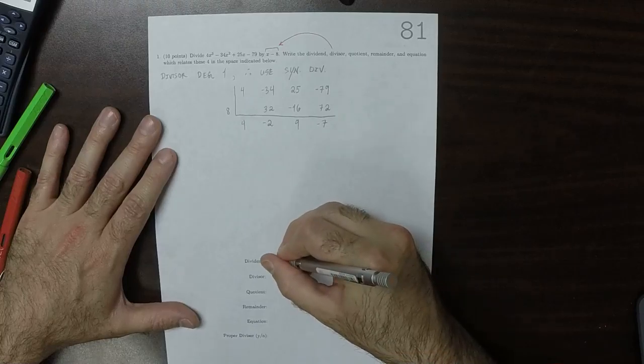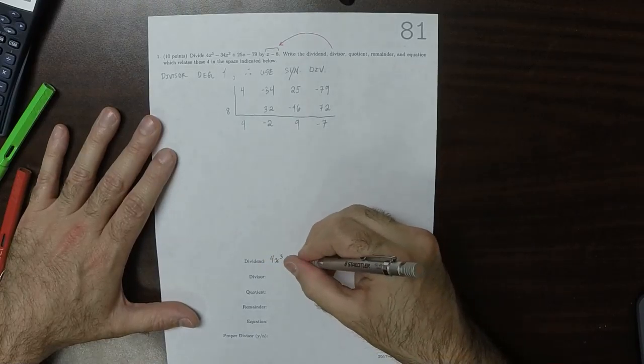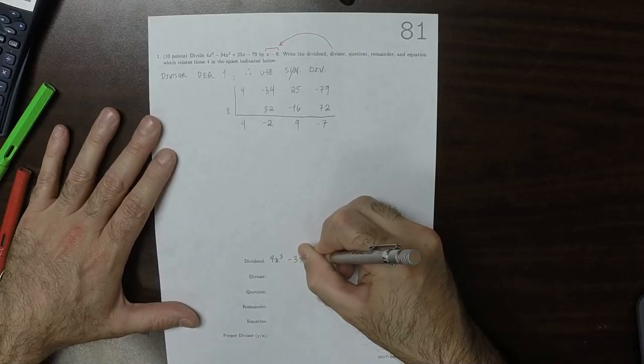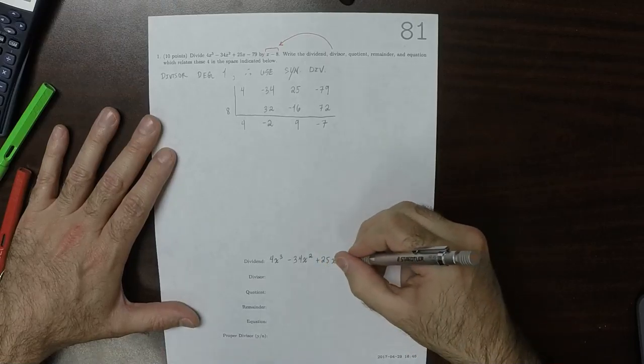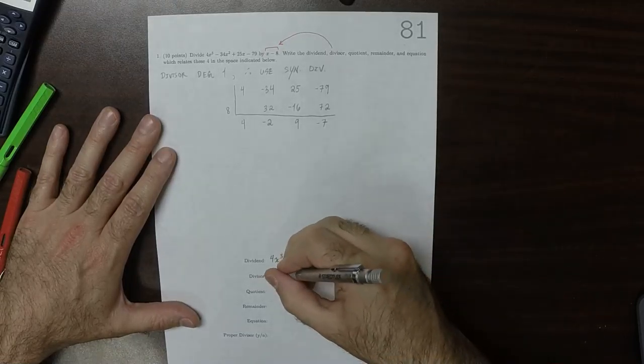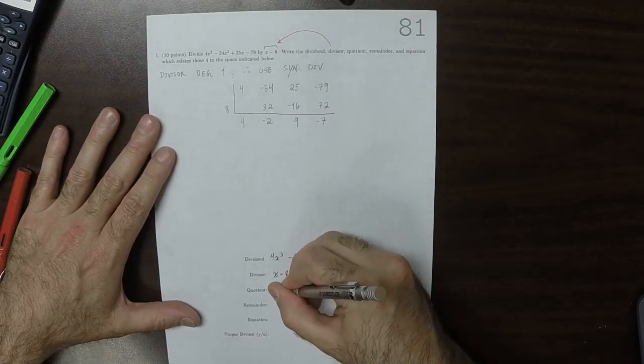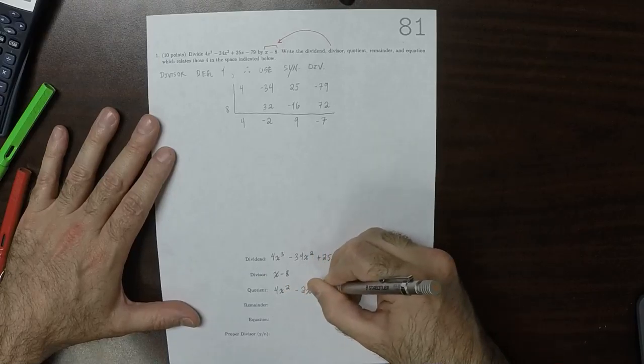OK, so taking those together, that is saying that the dividend was what was being divided. So that's 4x cubed, minus 34x squared, plus 25x minus 79.